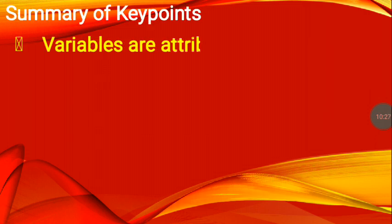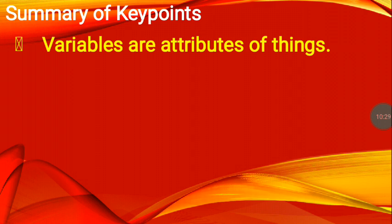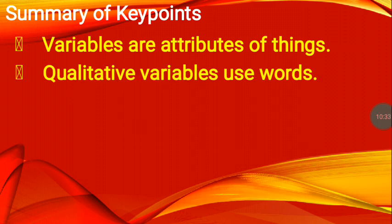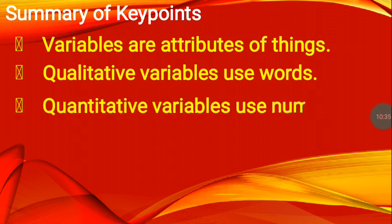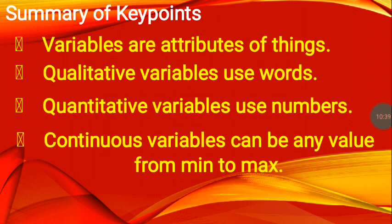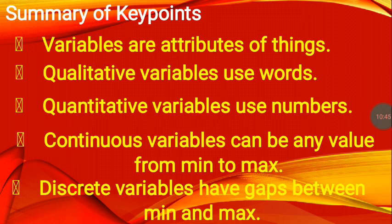Let's proceed to the summary of key points. Variables are attributes of things by definition. Qualitative variables use words, quantitative variables use numbers, continuous variables can be any value from minimum to maximum. Discrete variables have gaps between minimum and maximum.